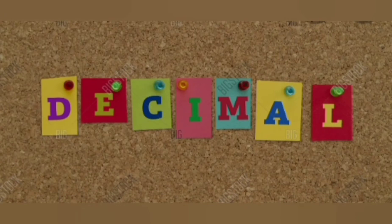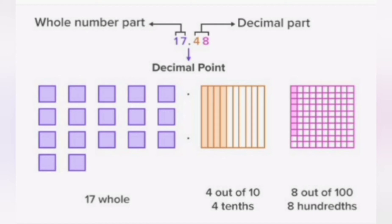A decimal number is a number with a decimal point in it. A decimal point separates a whole number part from its decimal or fractional part.